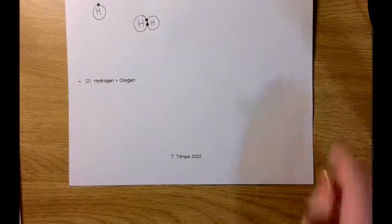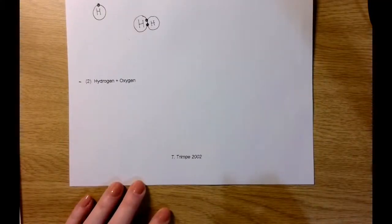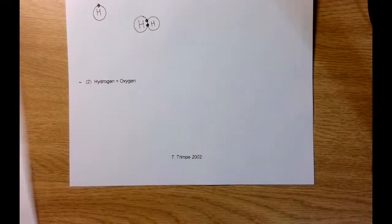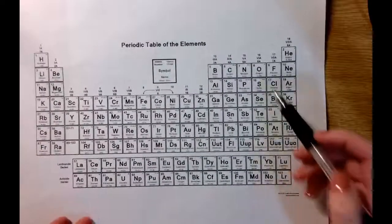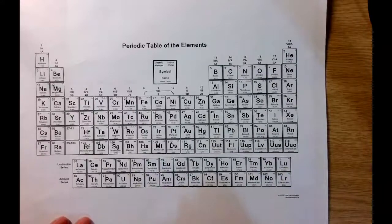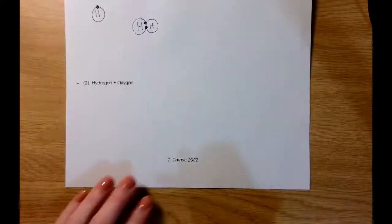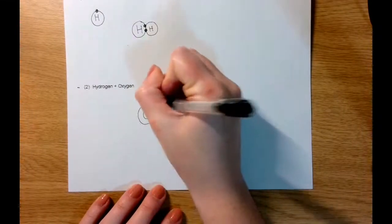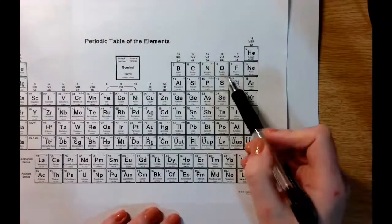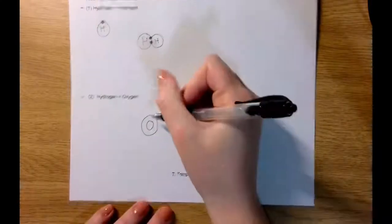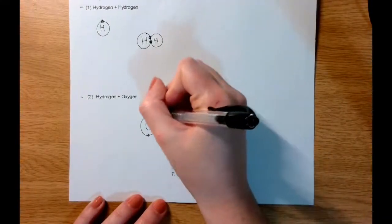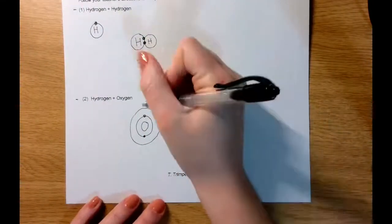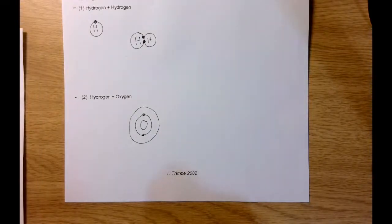Moving on to hydrogen and oxygen — hydrogen has 1 valence electron, and oxygen is in group 6A on the periodic table, so it has 6 valence electrons. Let's draw the Bohr model of an oxygen atom: oxygen's atomic number is 8, so it has a total of 8 electrons. We fill the first orbital with 2 electrons, then move to the second orbital where oxygen has its 6 valence electrons. So oxygen is looking for 2 more electrons to get a full octet of 8 in its outer orbital.